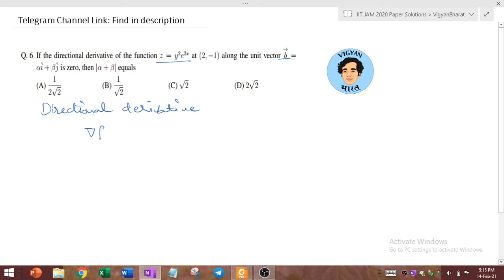In our case, gradient of f dot u. This is how the directional derivative is defined. Where this f is some scalar function, that is f can be a multi-variable function and u is a unit vector. So in our case this definition becomes gradient of z dot b.